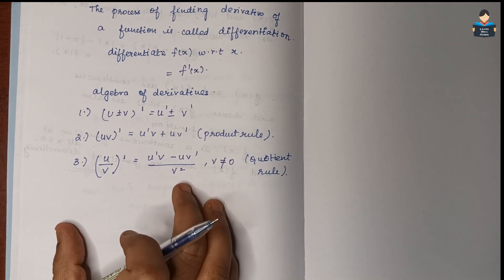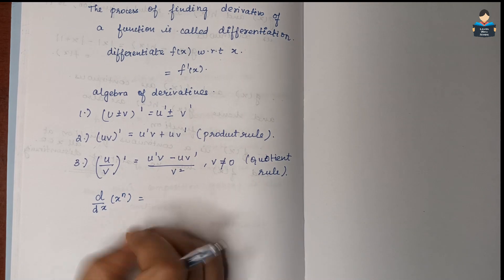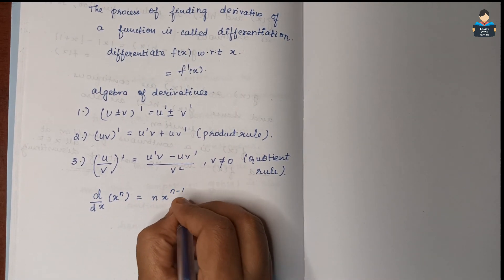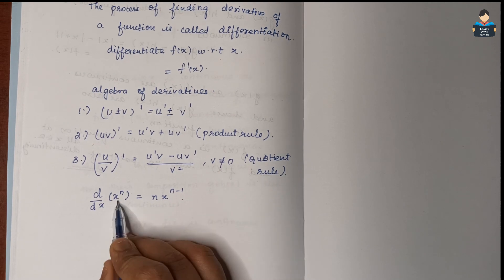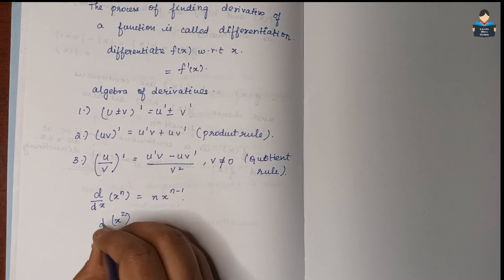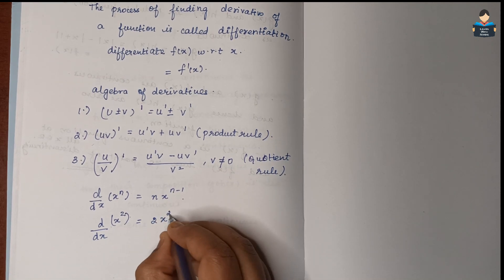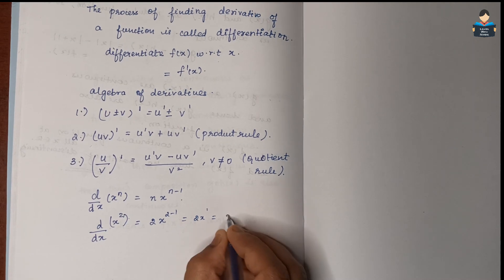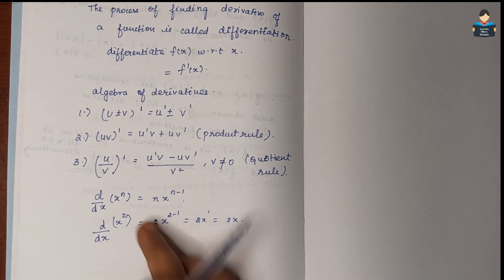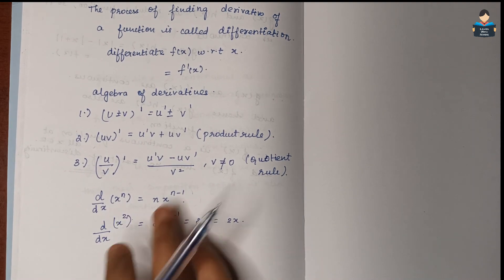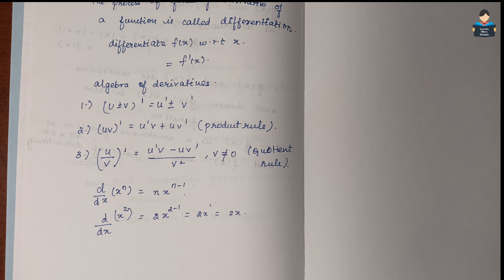We will also find out the differentiation of x to the power n. The derivative is n times x to the power n minus 1. For example, the differentiation of x squared: n is 2, so we get 2 times x to the power 1, which is 2x. The derivative of a constant is zero.